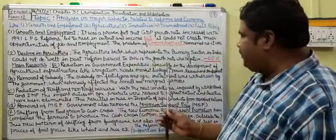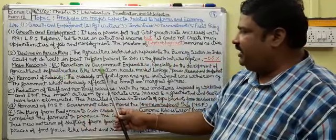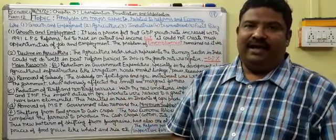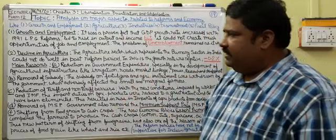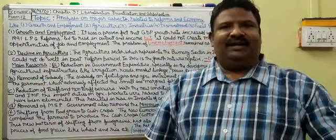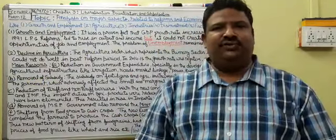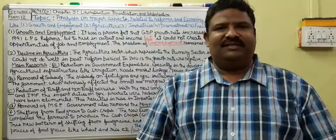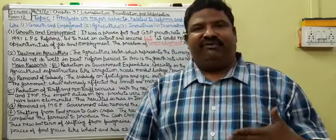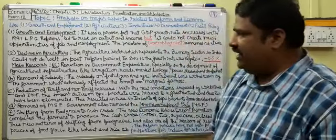The reduction in government expenditure on agriculture infrastructure — like irrigation, dams, roads, market linkage, power, and research and development — hit agriculture hard and led to a decline in agricultural productivity. Point B is the removal of subsidy. The subsidy on fertilizers, urea, tractors, and other instruments and tools — very useful especially for small and marginal farmers — was reduced or removed. This withdrawal adversely affected small and marginal farmers.